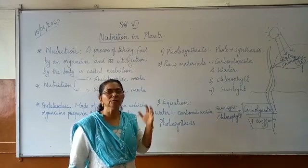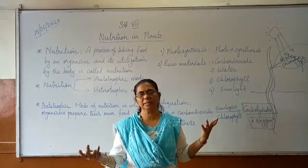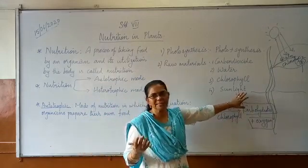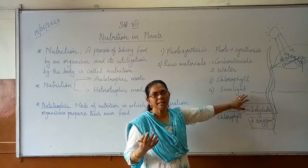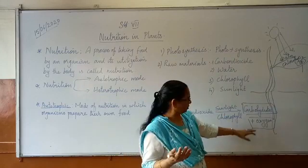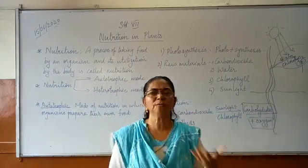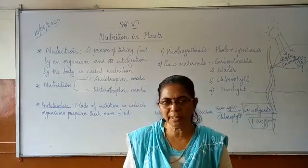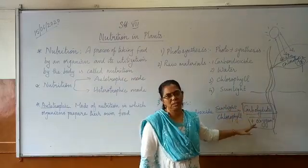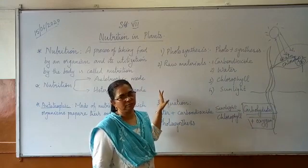Now the significance of photosynthesis: first of all, we get food from the plants. Without food, no living things can survive. The significance is that we get carbohydrates from the plants. And the next significance is oxygen. Oxygen is very much useful for our breathing. These are the two essential things produced through photosynthesis. Only plants can prepare food.